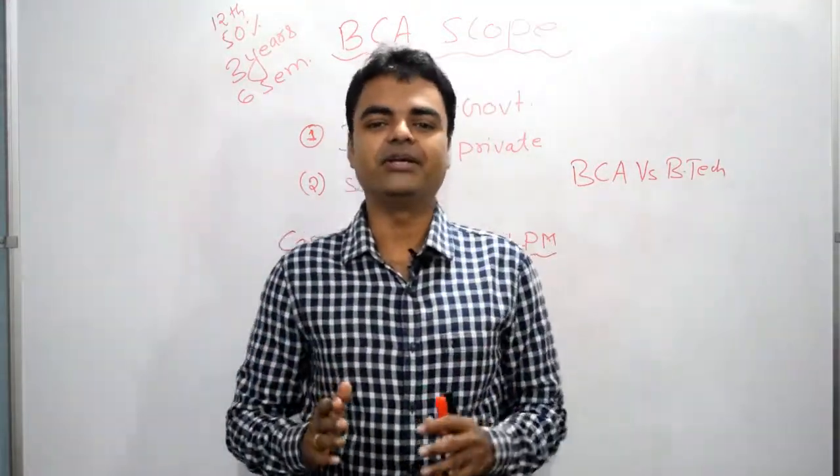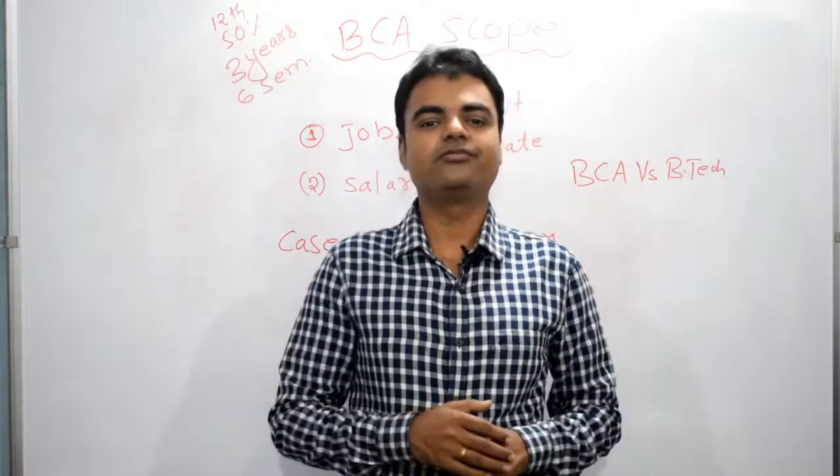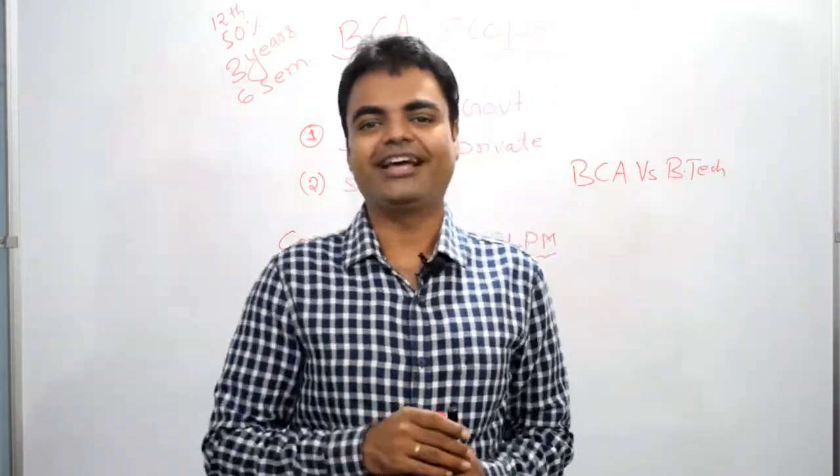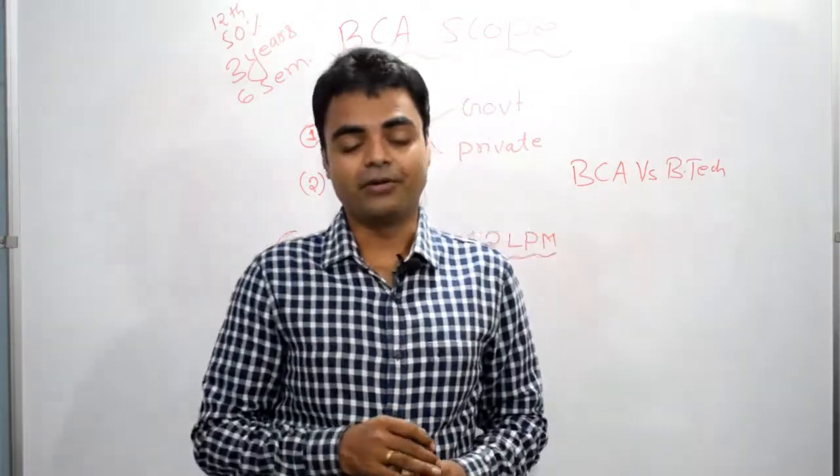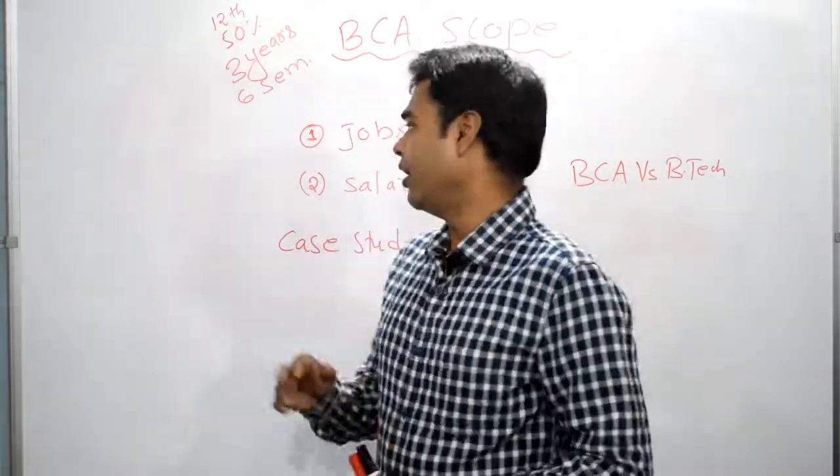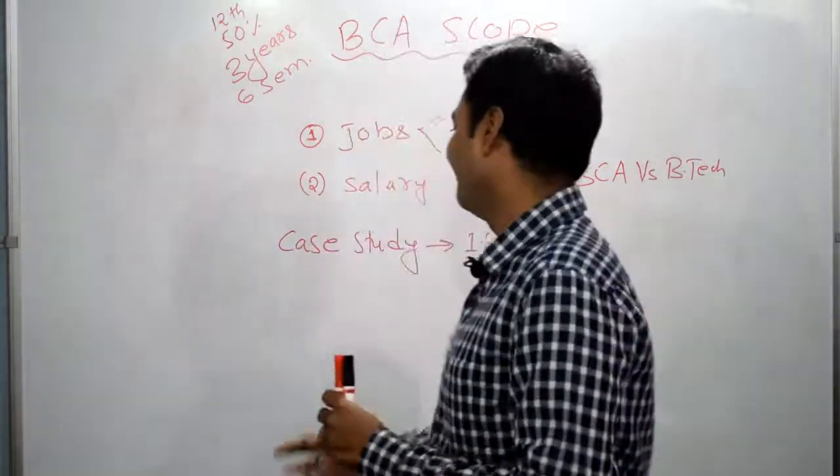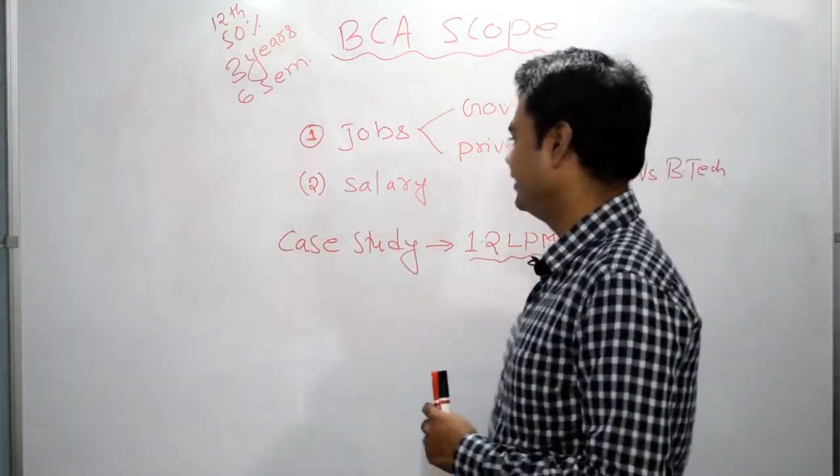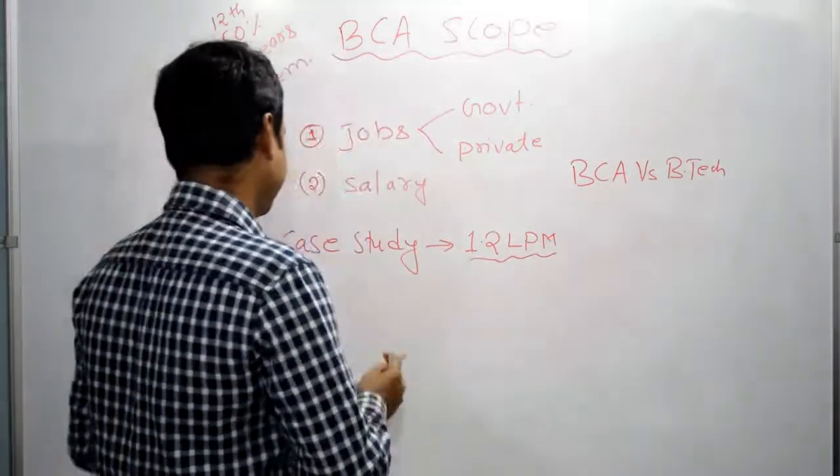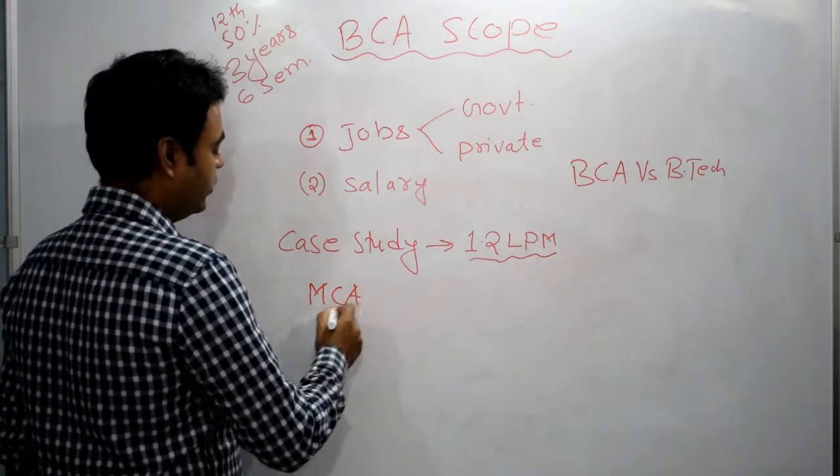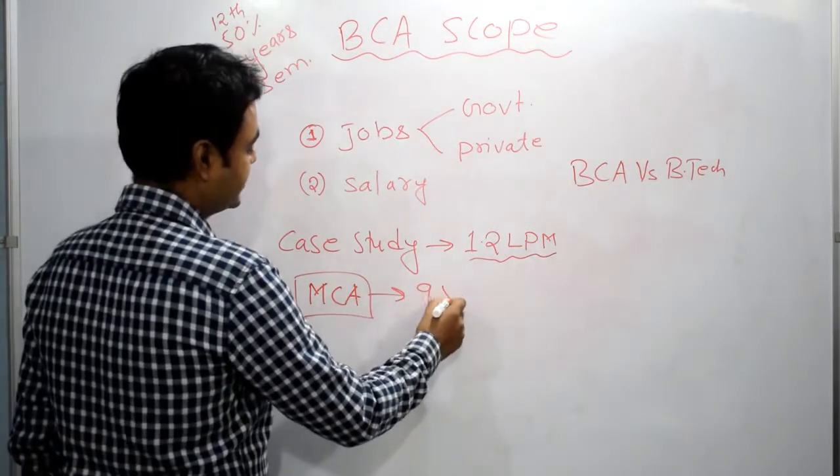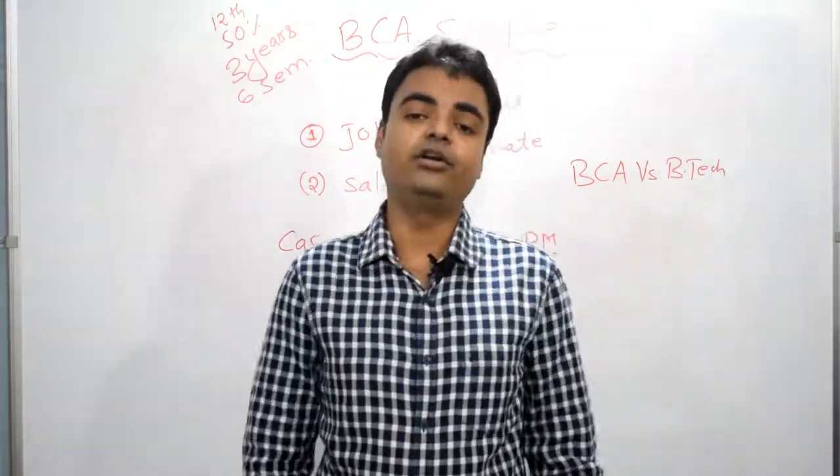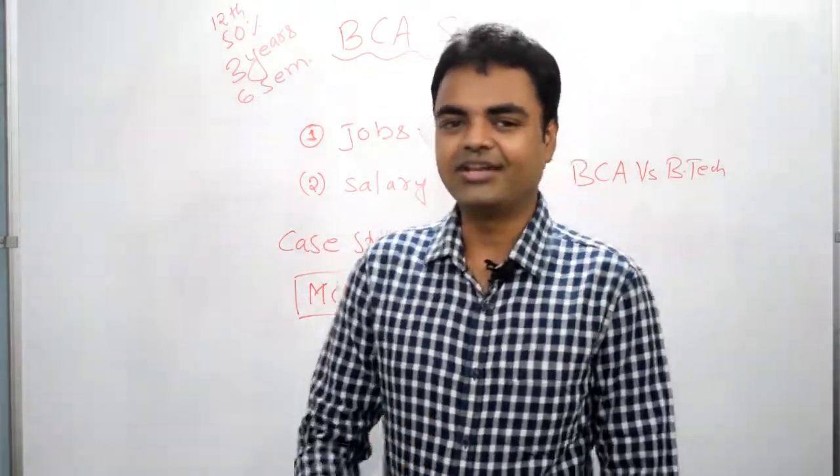If you want to watch this video in Hindi, I have already created it. You can see the description for the link. But if you want to continue with English, you can continue the video. In this video, I will talk about how to get admission, eligibility criteria, minimum percentage you require to get admission and duration of course. Of course, jobs, private as well as government, then salary. Then I will talk about BCA versus BTECH. Then at the end, I will talk about a case study. And of course, I will share about higher studies like MCA. And I will even share with you which is the best college in India with 95% placement after completing MCA.